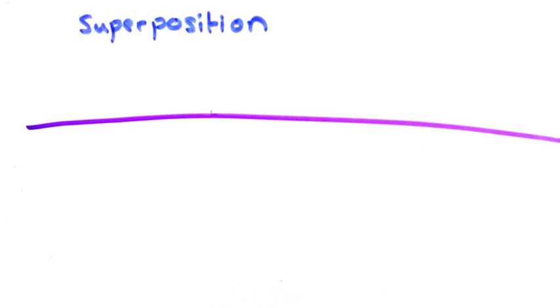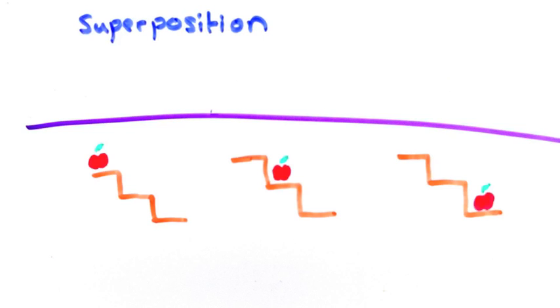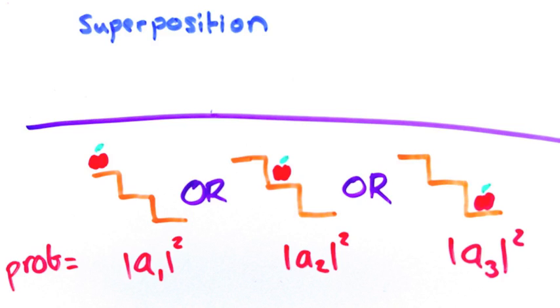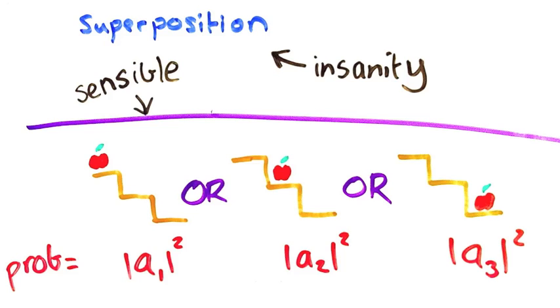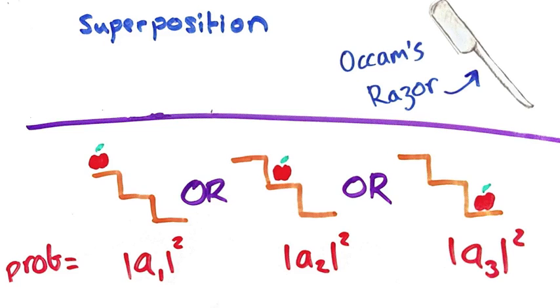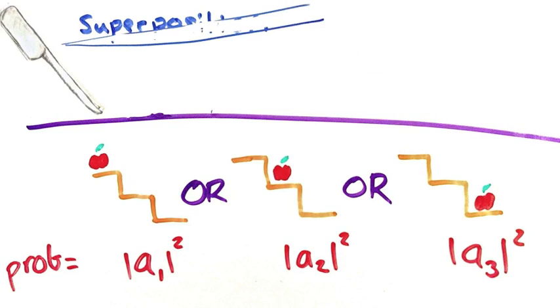But this seems so complicated. Why shouldn't we believe it's actually just in one state or another with the right probabilities, but we just don't know which? Both these explanations, the quantum mechanics superposition craziness one, and the regular sensible one, both predict the same thing, so shouldn't we believe the simpler one?